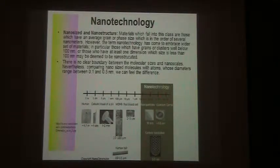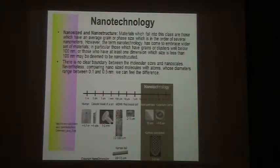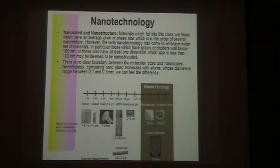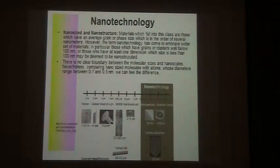When the genius physicist Richard Feynman predicted that we would be able to manipulate single atoms, during his time people were saying he was crazy. But time showed clearly that he was right. He used to say: there is a lot of space at the bottom. Materials that fall in the nanostructure range have an average grain or phase size on the order of several nanometers.